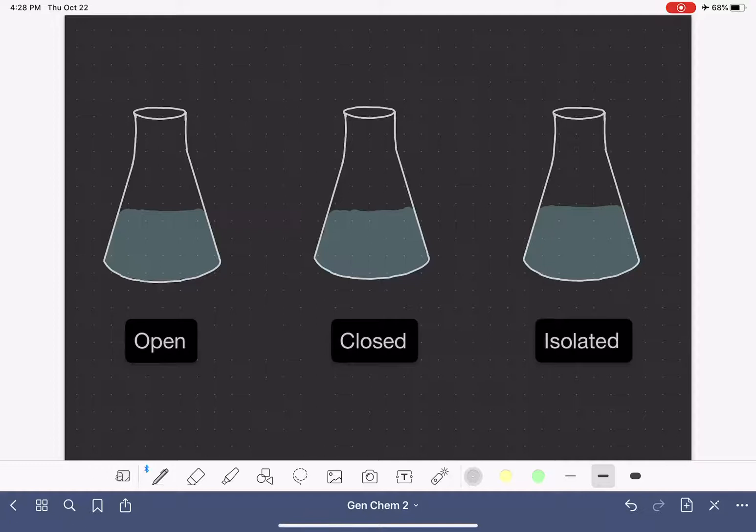An open system is the most common type of system that we work with in chemistry. And this system, as its name implies, is completely open to the surroundings. This means that the system can freely exchange mass with the surroundings. So it doesn't have a lid on it. It is not physically closed.